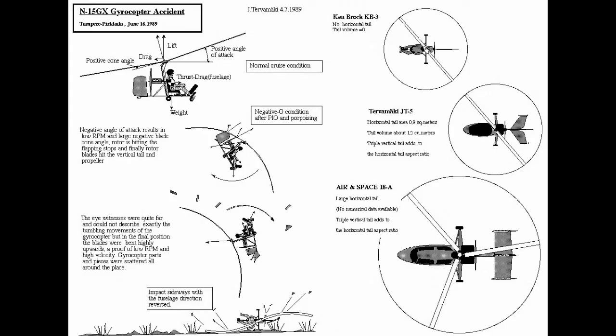At some point the over-controlling of the aircraft in pitch sees G at less than unity, and at low G the rotor slows because it is no longer being driven as it was at one G. With less drive and high drag the rotor slows. In extreme situations there is an increased flapping motion during the attempted pull-level or pull-up, and the rotor hits the propeller and rudder.